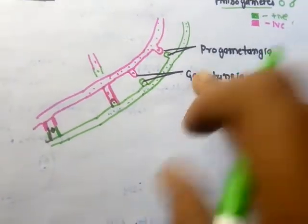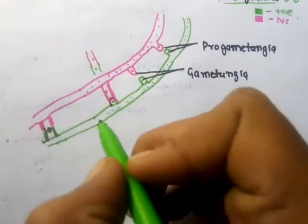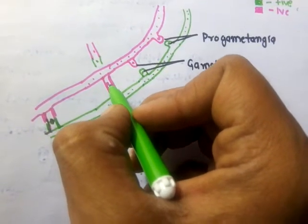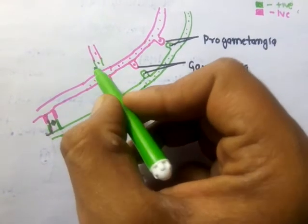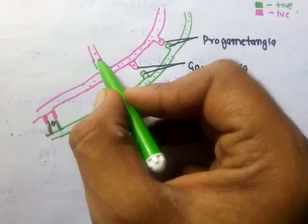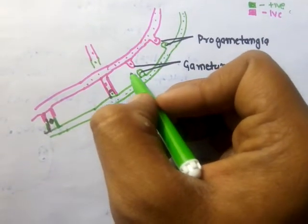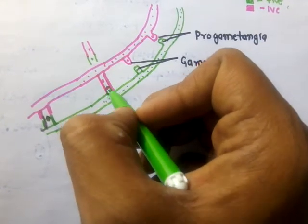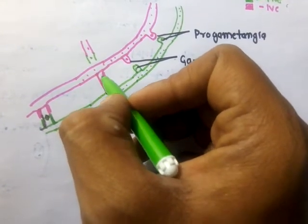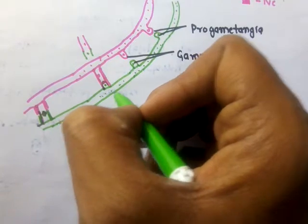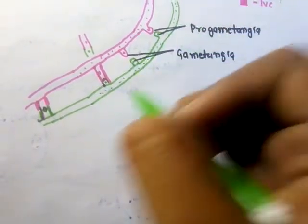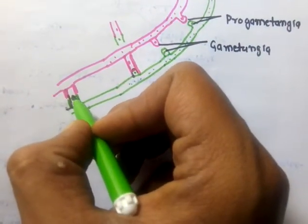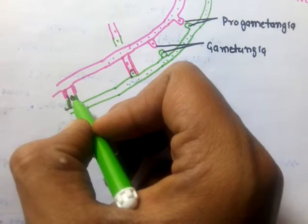In the next step, both gametangia fuse with each other — that is, they show conjugation. After the boundaries between them dissolve, a structure develops containing two nuclei: one nucleus from the negative strain and one from the positive strain.